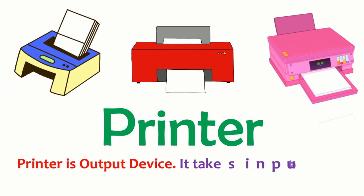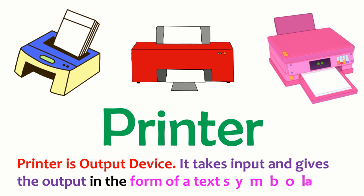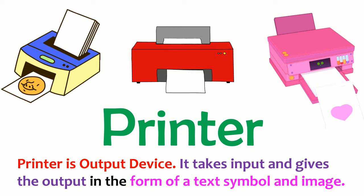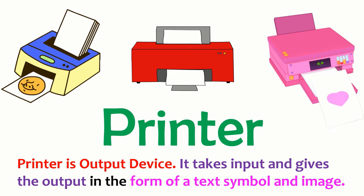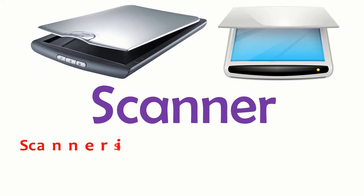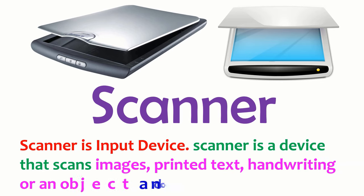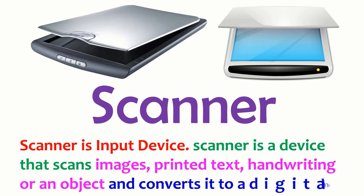Printer is an output device. It takes input and gives the output in the form of text, symbols, and images. Scanner is an input device. Scanner is a device that scans images, printed text, handwriting, or an object and converts it to a digital image.